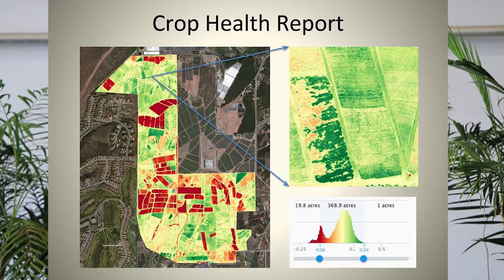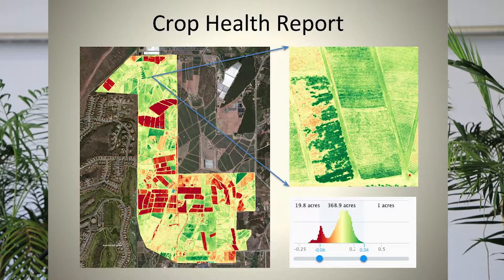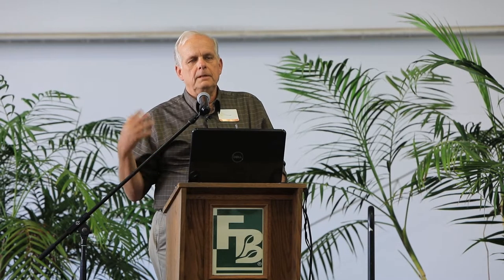These are layers that can be established — what happened last July, what's happening now. The crop health report is a way of looking at the health of the field by comparing the red and the green captured by the visual camera, which shoots in red, green, and blue sensitive light areas.